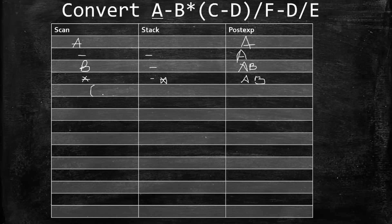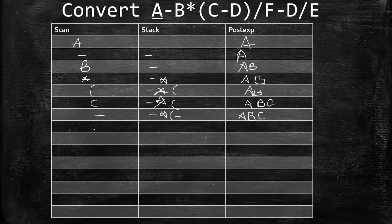Scan opening bracket — it goes directly to the Stack. PostExp continues as A B. Scan C — operand, PostExp becomes A B C. Scan minus — operator; look at Stack top which is the opening bracket, so push minus. Stack now has: minus, *, (, minus. Scan D — operand, PostExp becomes A B C D.